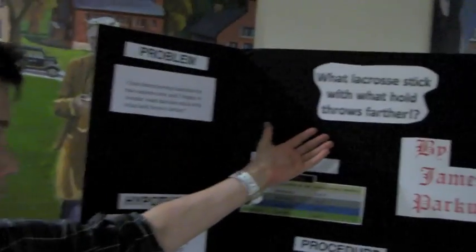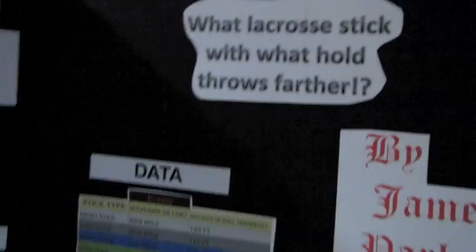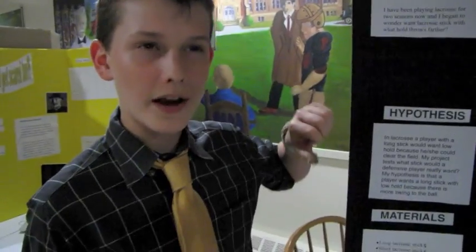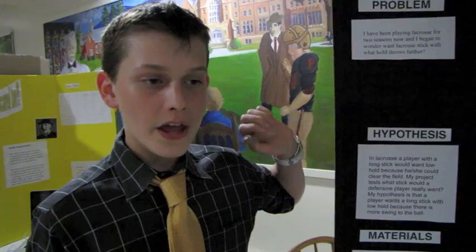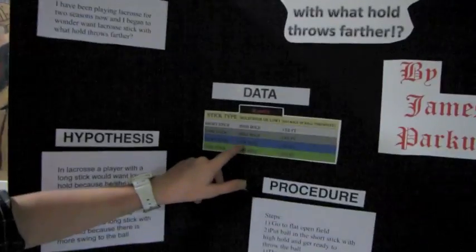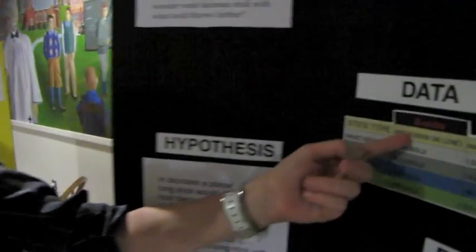I tested what cross stick with what hold throws harder. Hold is how much the ball can stay in the stick — so if you tilt it at about an 80-degree angle, will it fall out? If it does, it's called low hold, like what I have here. And if it doesn't, it's called high hold. High hold is usually harder to throw with because the ball doesn't come out of the stick as easily.